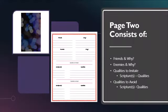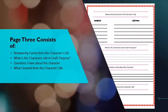Page two consists of friends and why, enemies and why, qualities to imitate — where you list the scriptures and the qualities — and qualities to avoid, again listing the scriptures and qualities. Page three consists of noteworthy events from this character's life, what is this character's role in God's purpose, questions I have about this character, and what I learned from this character's life.